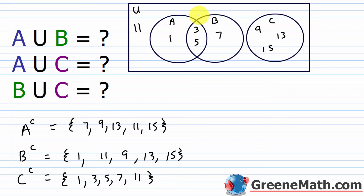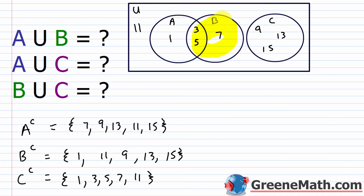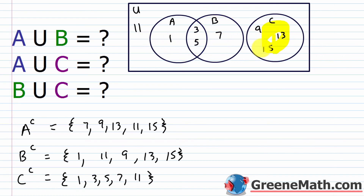Just looking at the Venn diagram makes things nice and easy. For A complement, shade set A and take everything outside — that's 7, 11, 9, 13, and 15. For B complement, shade B and take everything outside — that's 1, 11, 9, 13, and 15. For C complement, shade C and take everything outside — that's 1, 3, 5, 7, and 11.